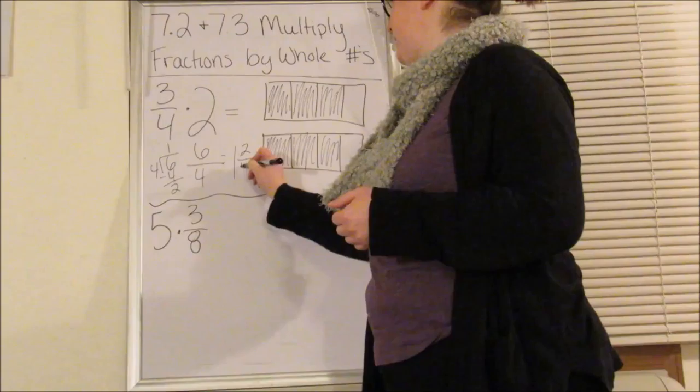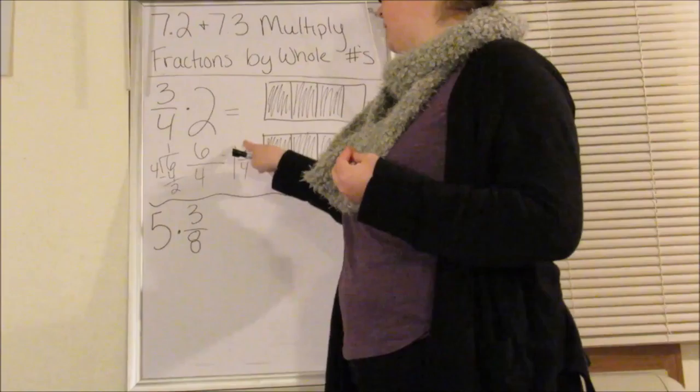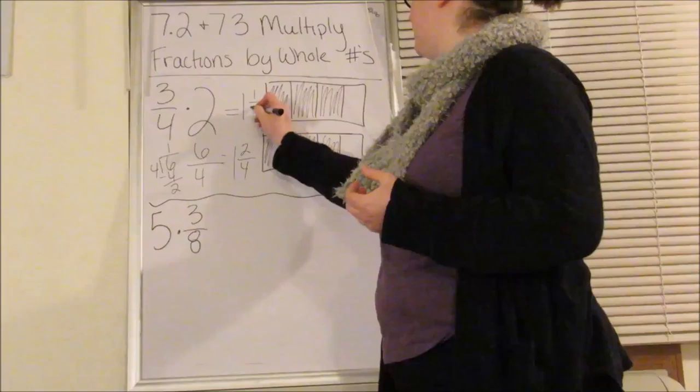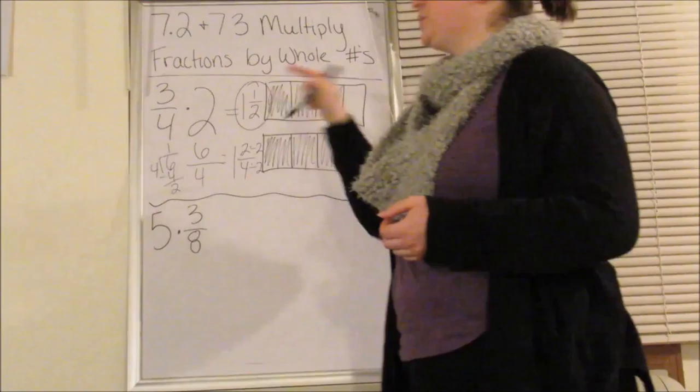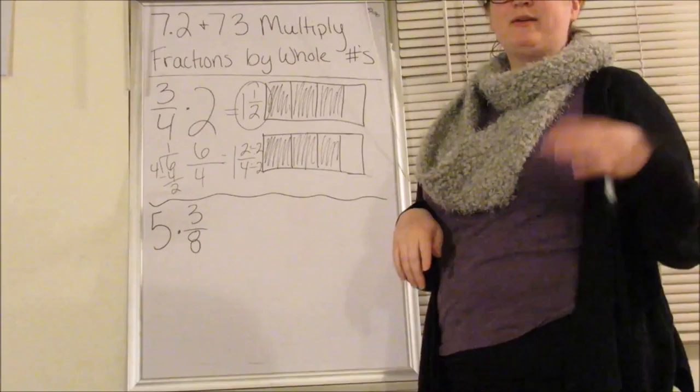Remember, this is my whole number. This is my numerator. This is my denominator. Am I done? Not quite. I still need to simplify. One and two-fourths simplifies to one and a half because you can divide both of these by two. So three-fourths times two equals one and one-half.